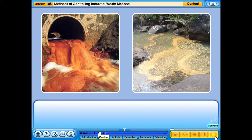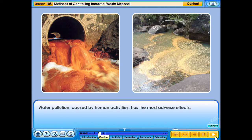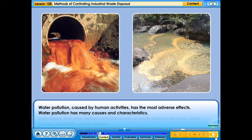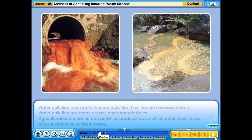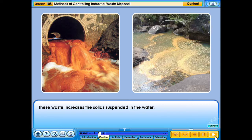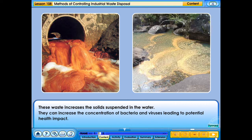All industrial waste must be disposed of properly and orderly. Water pollution caused by human activities has the most adverse effects. Water pollution has many causes and characteristics. Agricultural and other human activities produce waste which enters rivers, lakes, oceans and other surface waters. This waste increases the solids suspended in the water and can increase the concentration of bacteria and viruses, leading to potential health impacts.